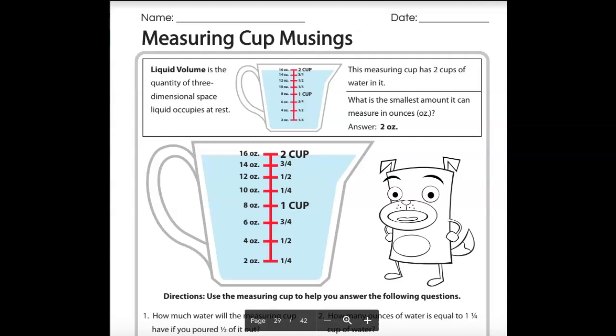This one's a little different. This is liquid measure, okay, water or oil or milk or something like that. Liquid is a little bit different. You use one of these kinds of measuring cups for liquid rather than what we used for the flour. All right, so liquid volume is the quantity of three-dimensional space liquid occupies at rest. Okay, that's a fancy way of just saying you pour it in the measuring cup, and then you look at where it comes up to on one of those lines.